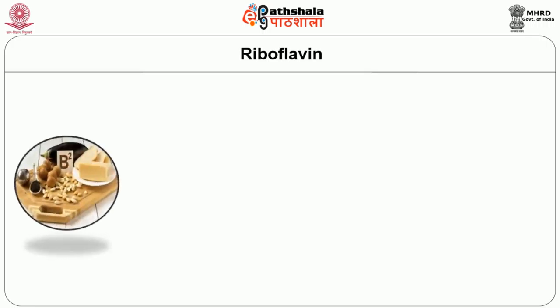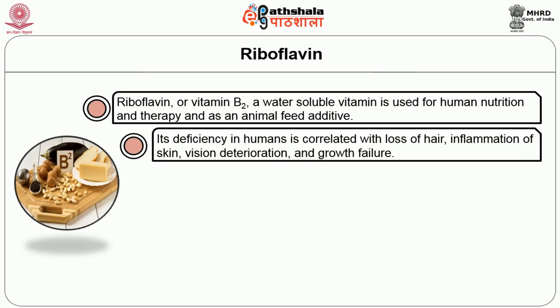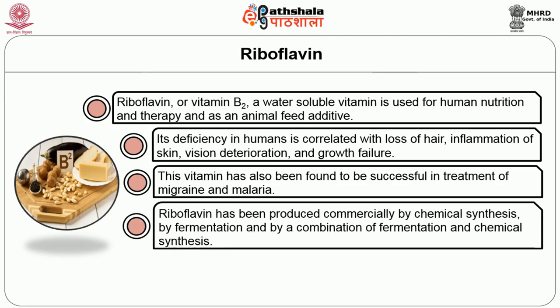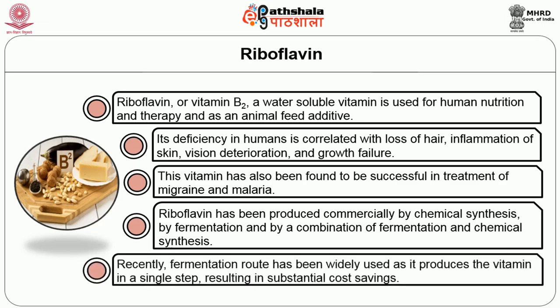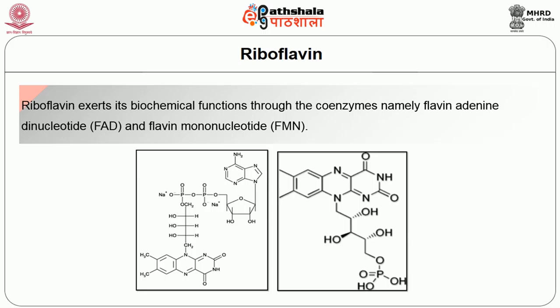The next important vitamin is riboflavin. Riboflavin or vitamin B2, a water-soluble vitamin, is used for human nutrition and therapy and as an animal feed additive. Its deficiency in humans is correlated with loss of hair, inflammation of skin, vision deterioration and growth failure. This vitamin has also been found to be successful in treatment of migraine and malaria. Riboflavin has been produced commercially by chemical synthesis, by fermentation, and by a combination of fermentation and chemical synthesis. Recently, the fermentation route has been widely used as it produces the vitamin in a single step resulting in substantial cost savings. Riboflavin exerts its biochemical functions through the coenzymes namely flavin adenine dinucleotide (FAD) and flavin mononucleotide (FMN).